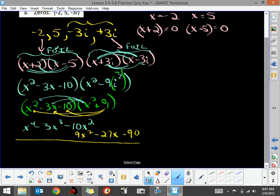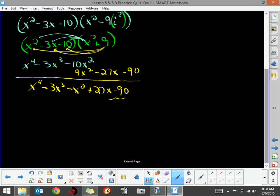Draw a line, collect your like terms. We have our polynomial of x⁴-3x³-x²+27x-90. This is how we generate a polynomial with integral coefficients of least degree. It's basically writing the factors and then using your distributive property.